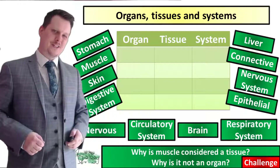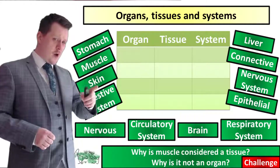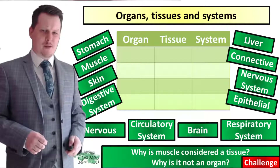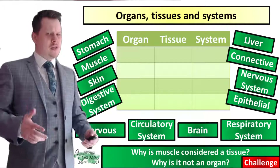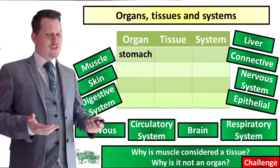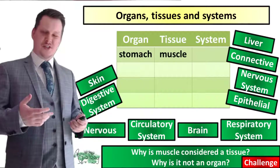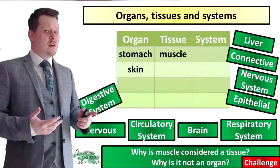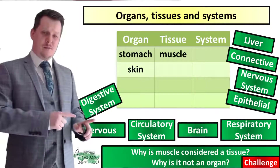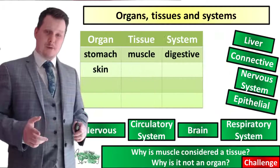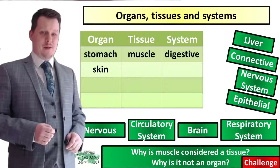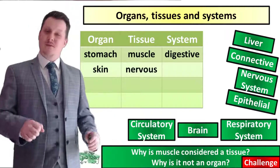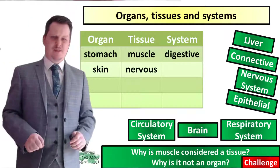OK, are we all finished? So starting with the stomach and working our way counter-clockwise we're going to put them into our table. Stomach is an example of an organ, muscle is a tissue, skin is an organ — it's made up of many epithelial tissues. Digestive system — hey, it ends in the word system, it must be a system. We have nervous tissue. Circulatory system — the giveaway's in the system again.